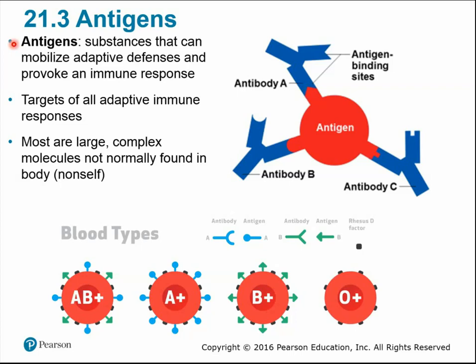An antigen is any substance that can trigger an immune response. Antigen is short for antibody-generating — we generate antibodies against foreign substances. Antigens are typically proteins on the surface of cells not normally found in our own body cells. The adaptive immune system is specific, meaning antibodies are specific for certain antigens — it works like a lock-and-key or puzzle-piece mechanism where they must fit together for that particular antigen.